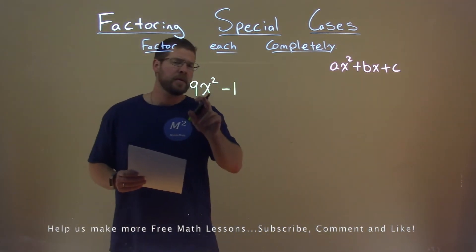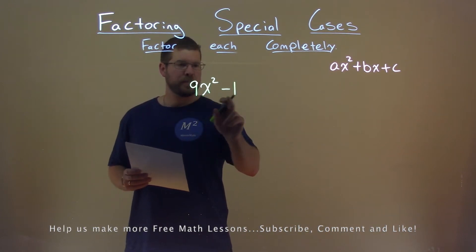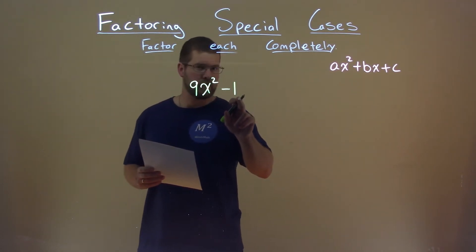But what do we notice? Our 9, our a value, is a perfect square, so is our 1, a perfect square as well.